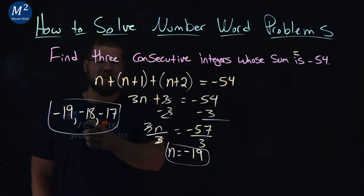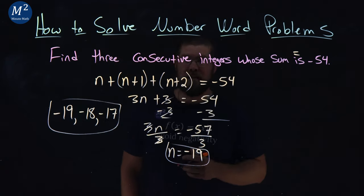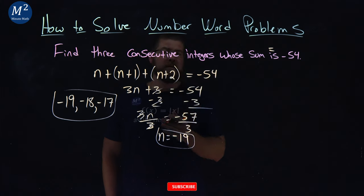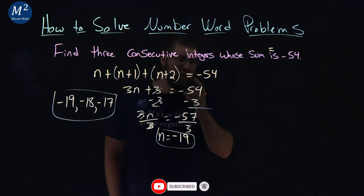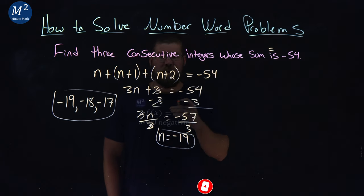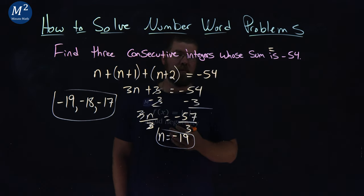We got our answer: negative 19, negative 18, negative 17. I hope you learned something about consecutive integers and how to solve number word problems. If you did, make sure you like this video and subscribe to our YouTube channel. This helps us make more free math lessons for everyone. As always, thanks for watching.